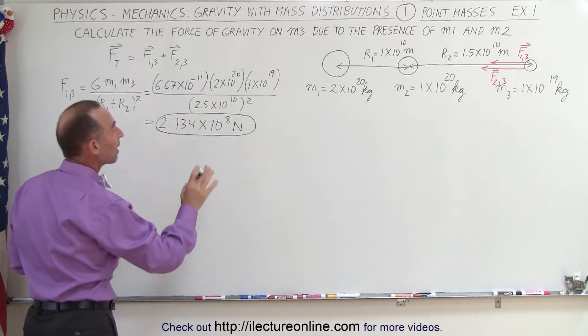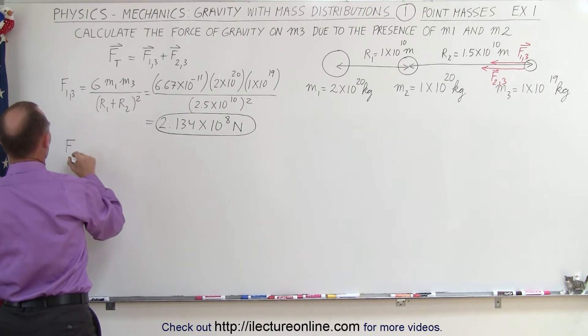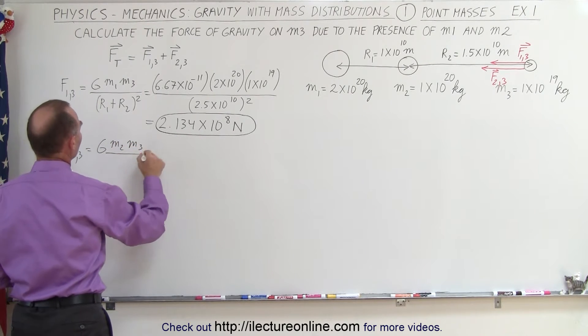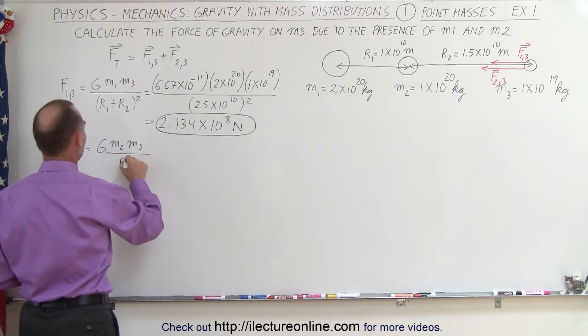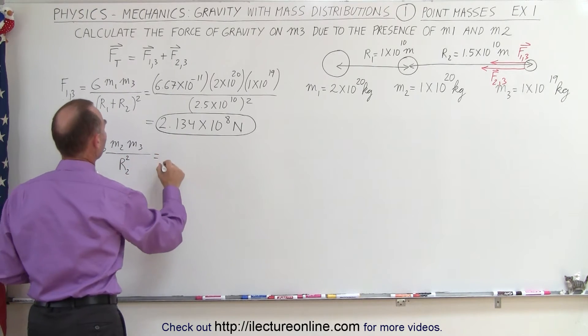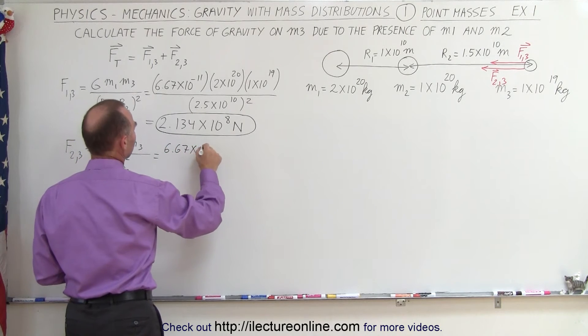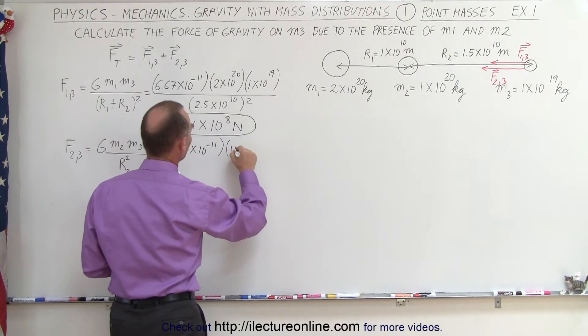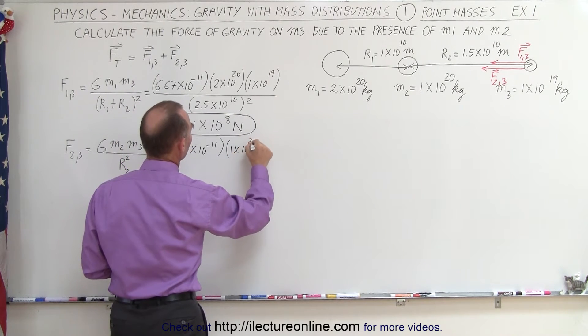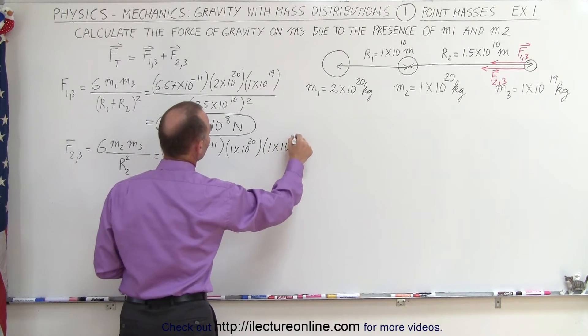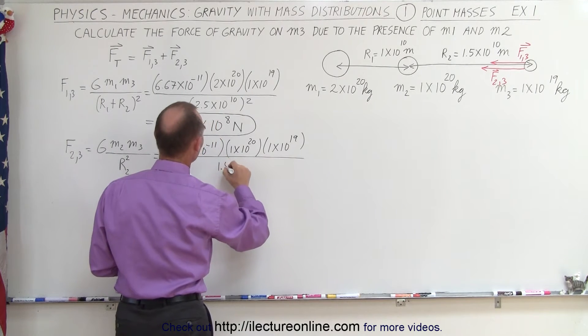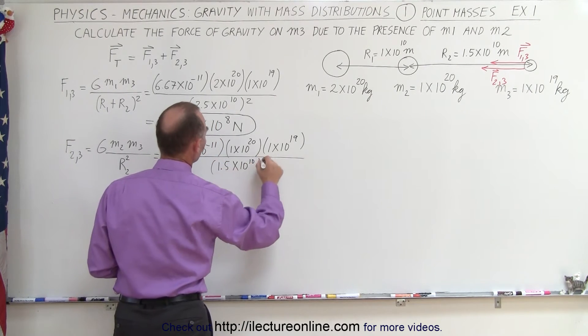Now we do the same between mass 2 and mass 3. So we have force, not 1 in this case but it'll be 2 and 3. That's equal to G m2 m3 divided by just r2 squared. And that gives us 6.67 times 10 to the minus 11. Again, we keep just the numbers. We have 1 times 10 to the 20th and 1 times 10 to the 19th, and the whole thing divided by 1.5 times 10 to the 10th, and we have to square that.